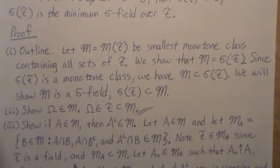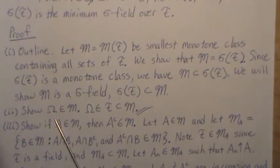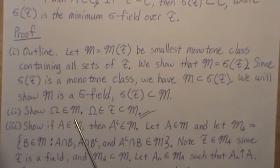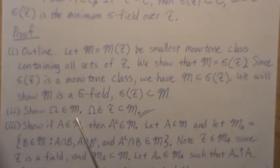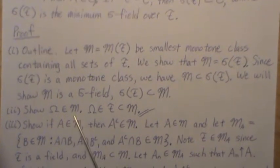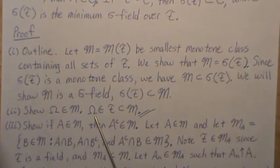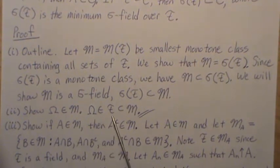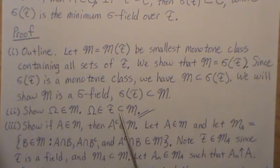Step one: we need to show that Ω is in M. Since Ω is in F, which is a subset of M, it has to be in M.